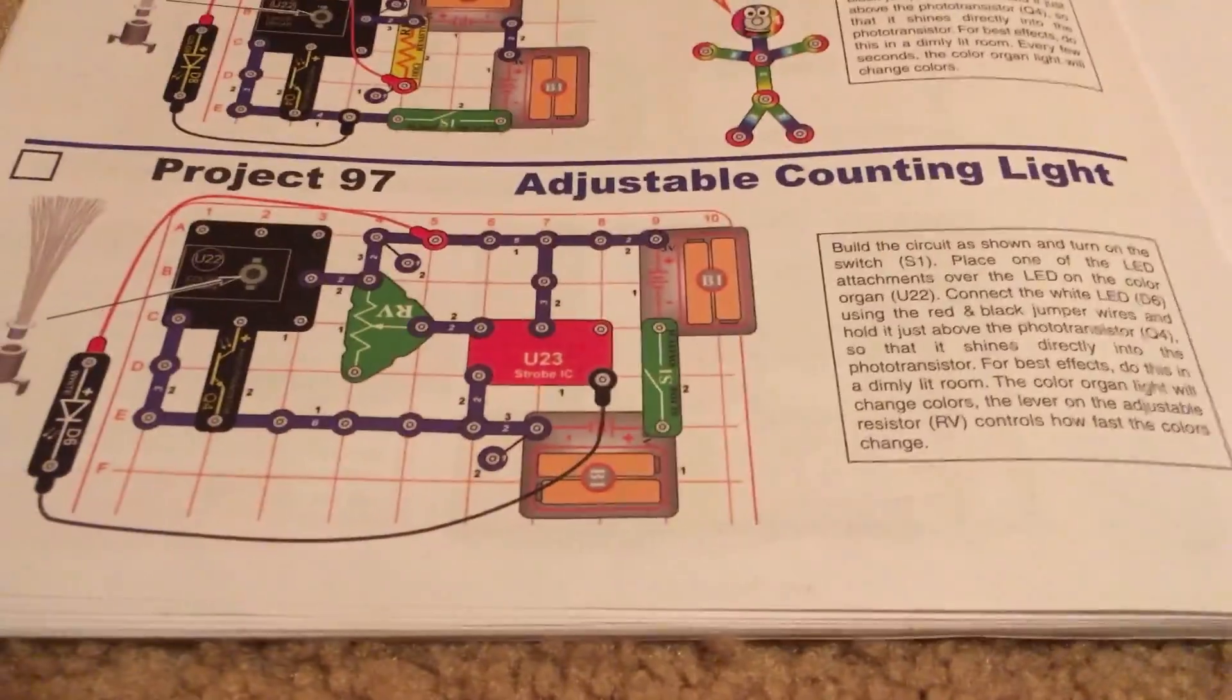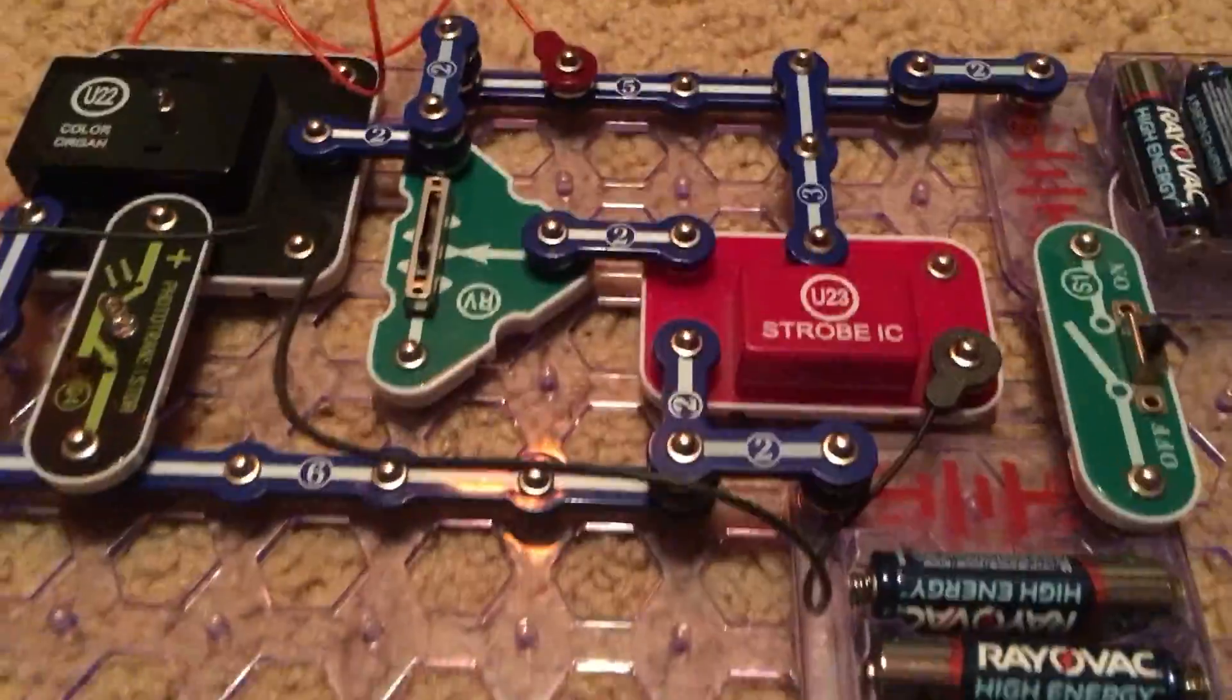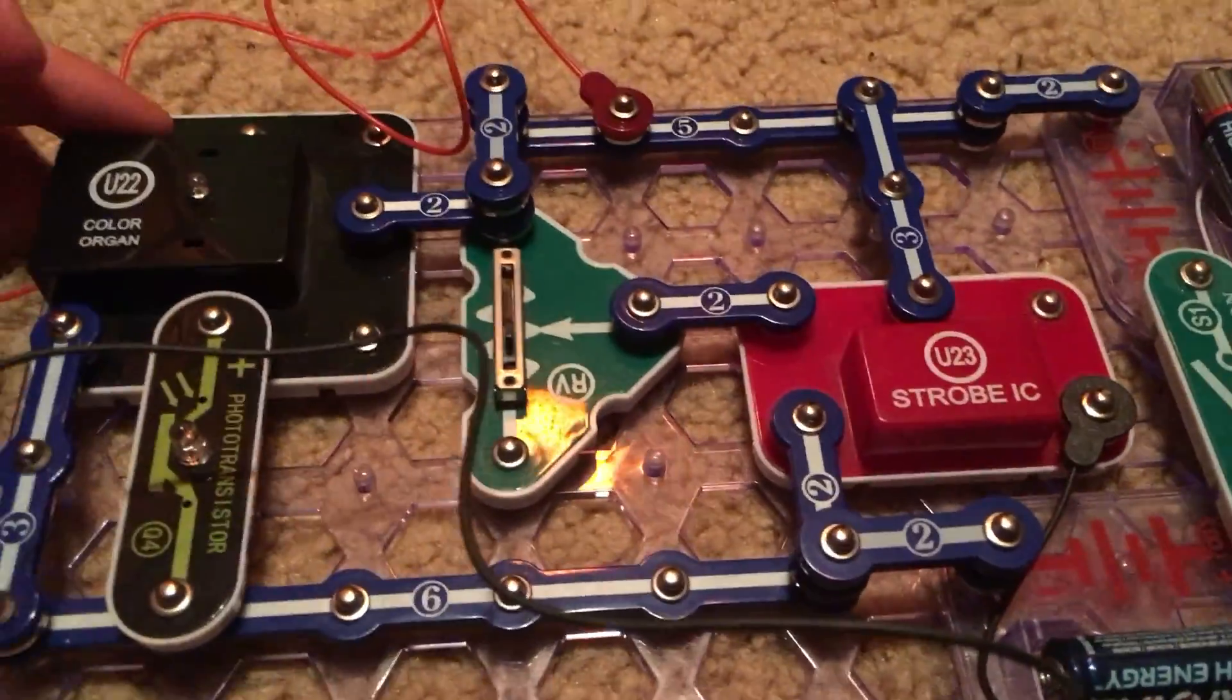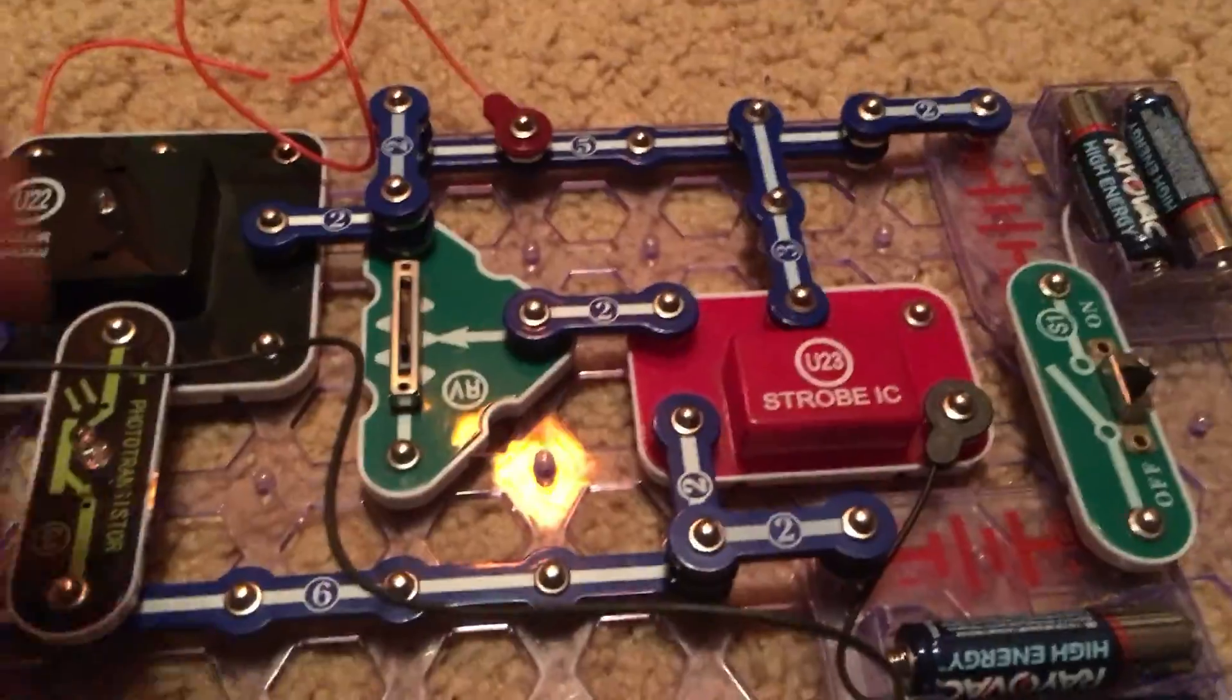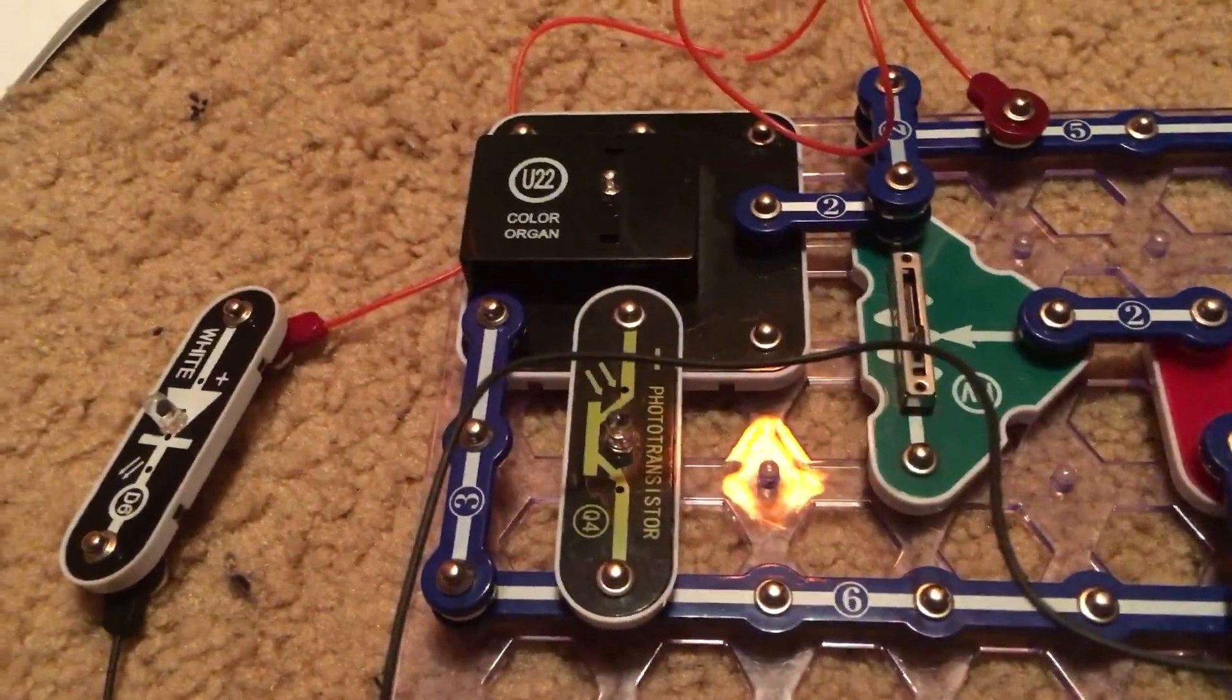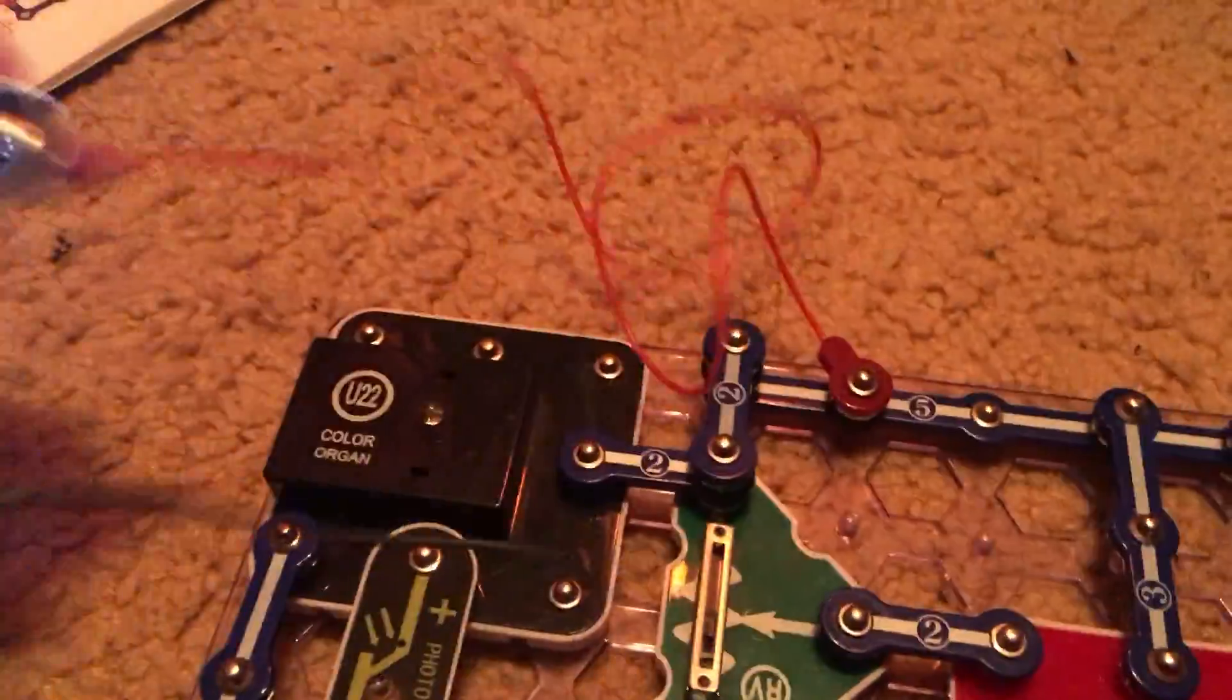97 is adjustable counting light. We are going to use this project, and you can see that we included the strobe integrated circuit, the phototransistor, and the adjustable resistor. We will turn on the slide switch, and the white LED will begin flashing at a fast rate.